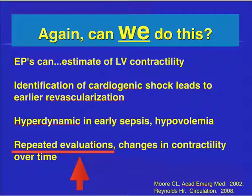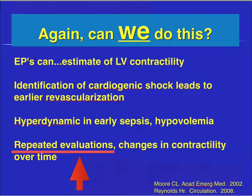Multiple studies have shown that emergency medicine and critical care physicians can assess LV function at the bedside for point of care. We're not making decisions about mitral or tricuspid regurgitation — just overall function. Estimation of LV contractility is comparable to cardiologists and radiologists reading echocardiograms. Identification of cardiogenic shock can lead to earlier revascularization. The most important contribution we make is repeated evaluations — after fluid boluses, Lasix, or inotropic agents — so if we make the wrong decision, we know immediately and can correct the patient's course.